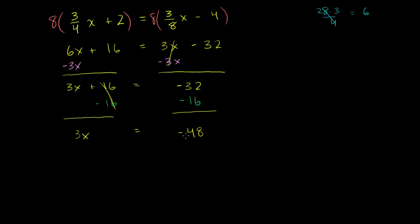So we have 3x is equal to negative 48. To isolate the x, we can just divide both sides of this equation by 3. So let's divide both sides of that equation by 3. The left-hand side of the equation, 3x divided by 3 is just an x. That was the whole point behind dividing both sides by 3. And the right-hand side, negative 48 divided by 3 is negative 16. Negative 16. And we are done.